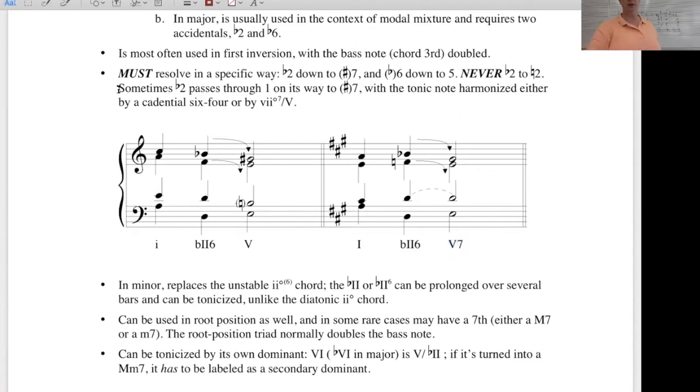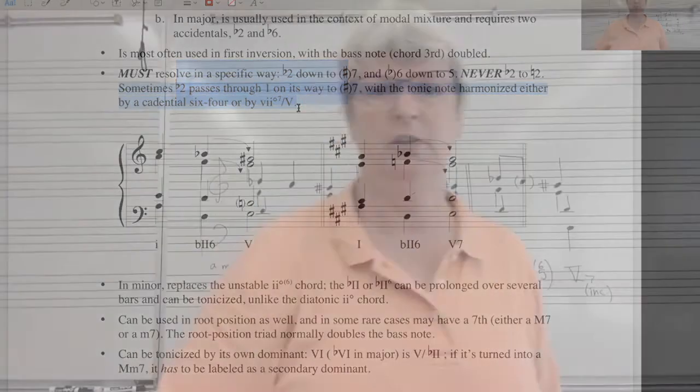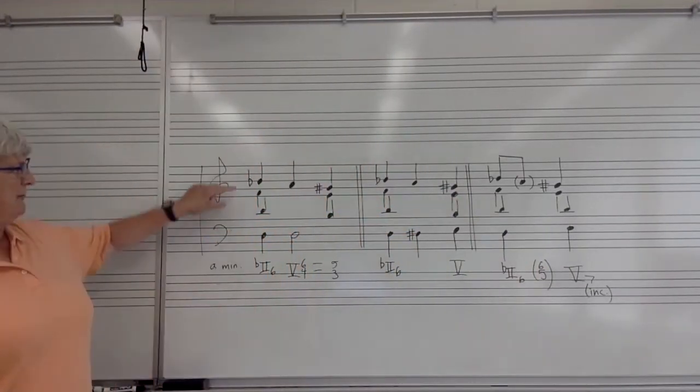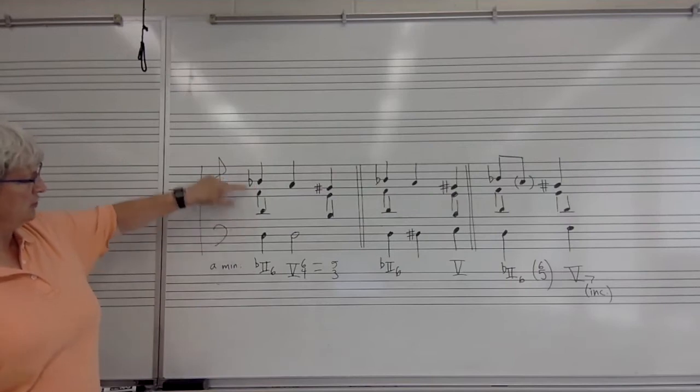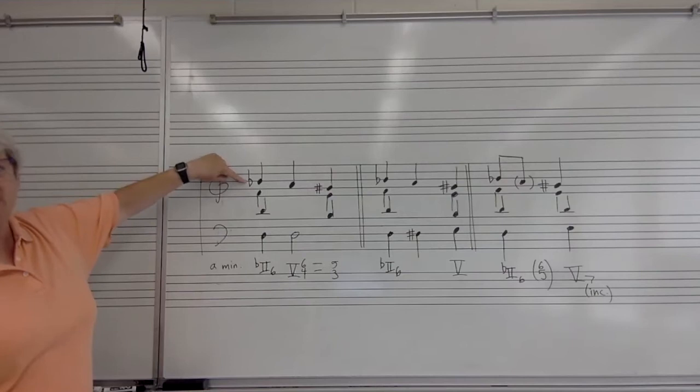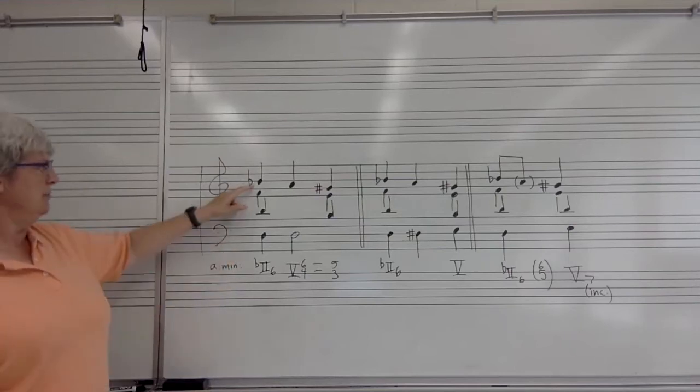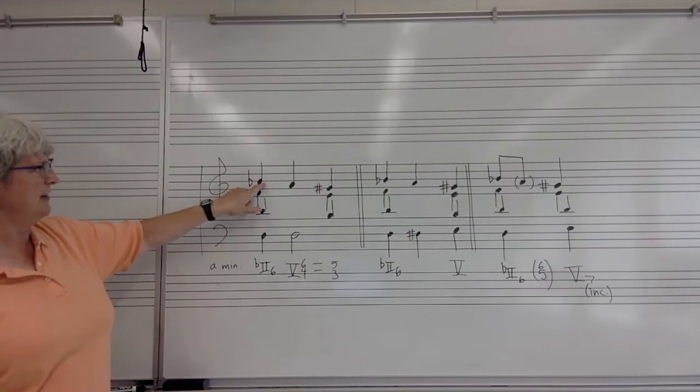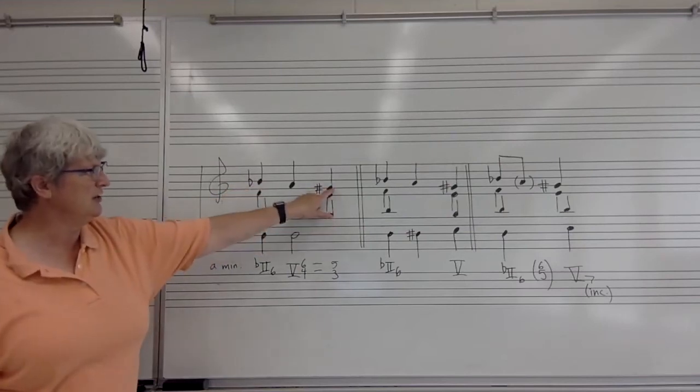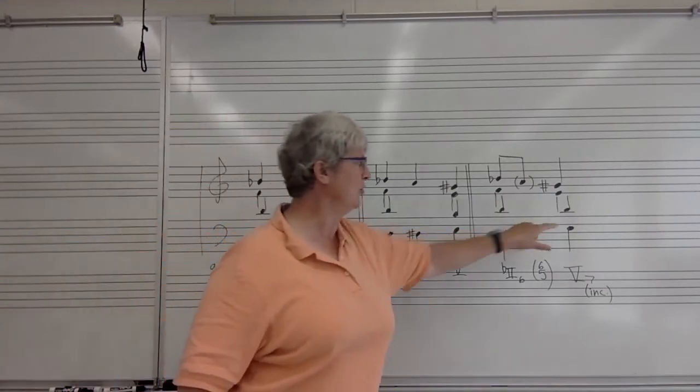So let me talk about this little sentence here that I just sort of slipped into the handout. It says that sometimes the flat scale degree two passes through Do on its way to T with the tonic note harmonized either by a cadential six four or by a seven diminished seven of five. Take a look at these examples on the board. In every case, I've written the flat two six with the flat two in the soprano. It doesn't have to be this way. It just happens a lot because that's a very strong melodic note, but we could put the B-flat in an inner voice.